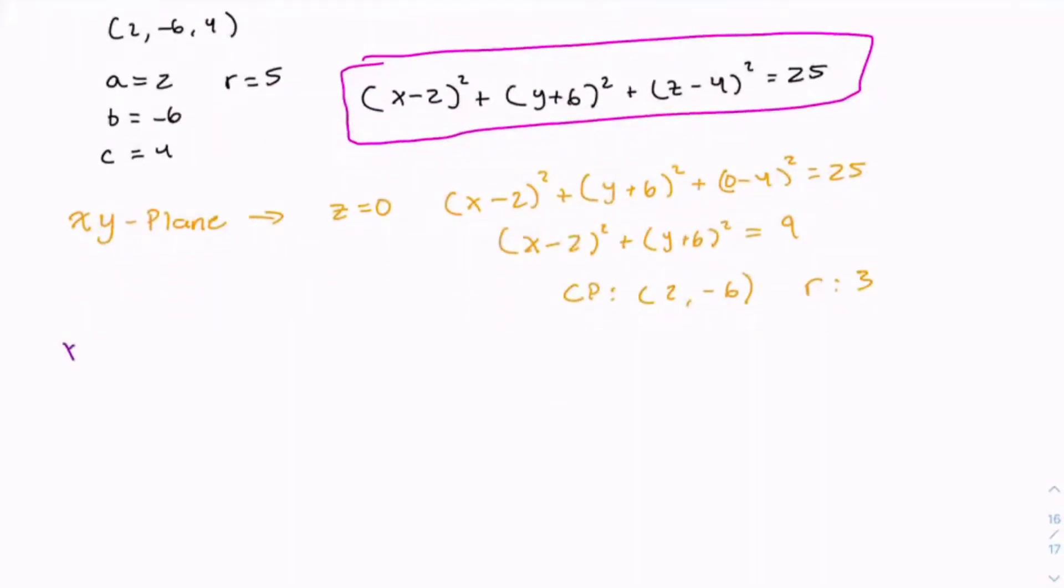Alright, so now let's move on to the xz-plane, which means y equals 0. And we can just do the same thing we did previously and plug y equals 0 into the equation. So we have (x - 2)² + (0 + 6)² + (z - 4)² = 25. We can simplify this. (x - 2)² + (z - 4)² = -11.